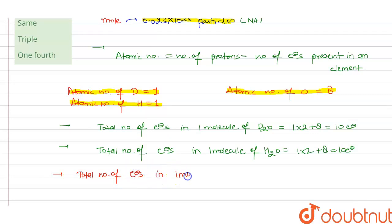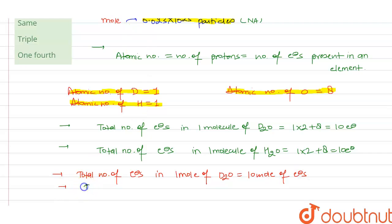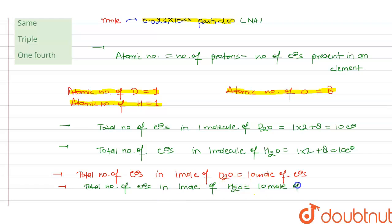Therefore, one mole of D2O contains 10 moles of electrons, since each molecule contributes 10 electrons and one mole contains Avogadro's number of molecules.